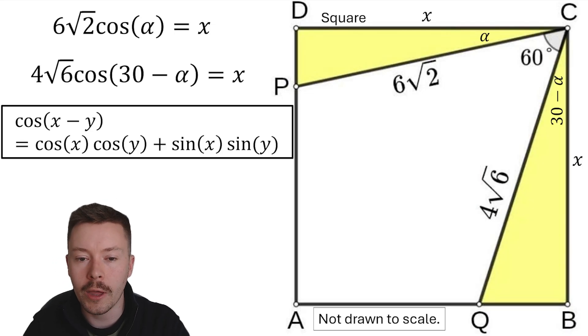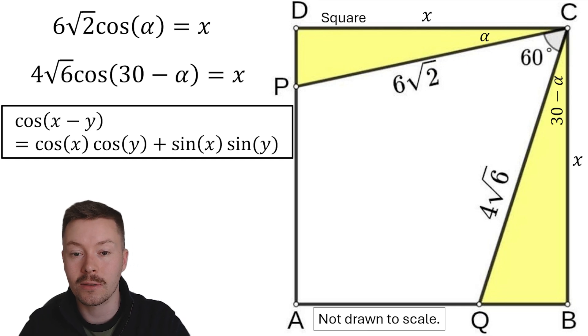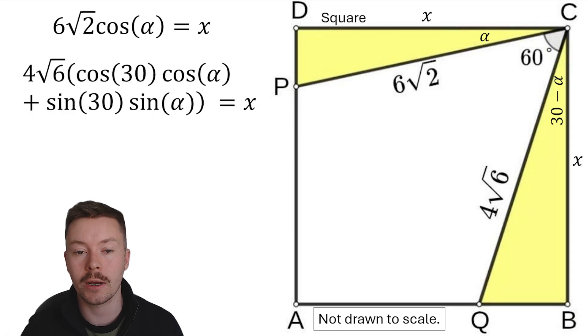From there, what I'm going to do is my x in this, in terms of this identity, is going to be 30. My y is going to be the alpha. I'm going to substitute in and I'm going to get this: 4 root 6 times by all of cos 30 cos alpha plus sine 30 sine alpha equals x.